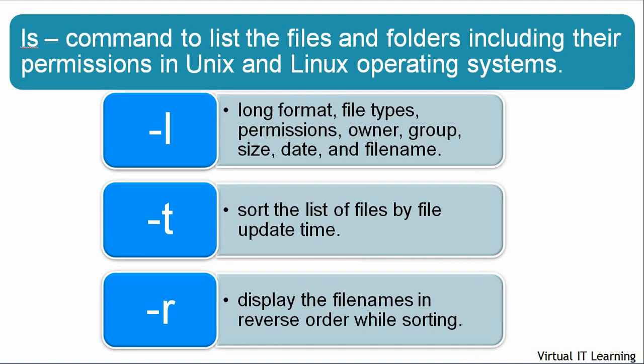We will begin with the ls command, which is used to list files and folders including their permissions in Linux and Unix operating systems. There are various parameters you can use with ls. For example, the l parameter displays long format, file types, permissions, owner, group, size, date, and file name. The t parameter sorts files by update timestamp, and r displays file names in reverse order while sorting.